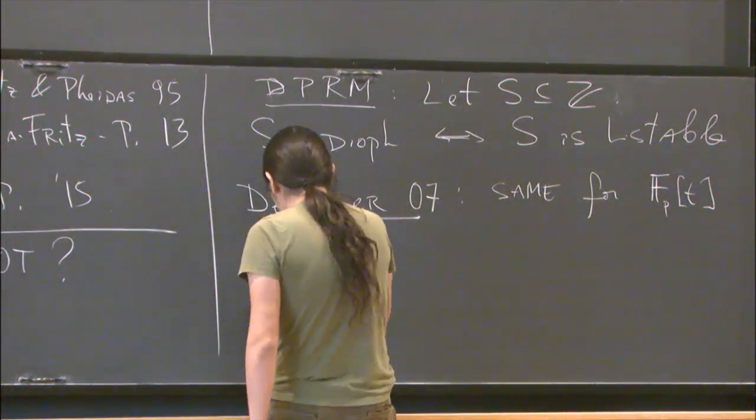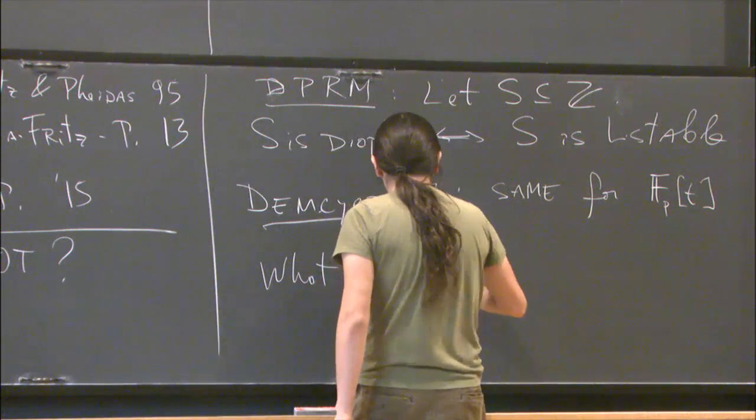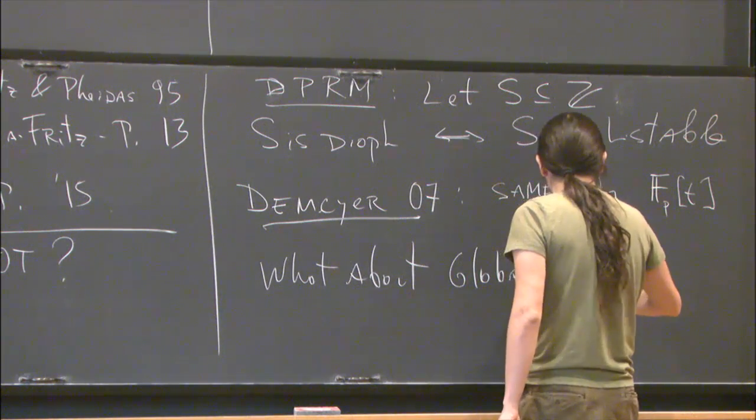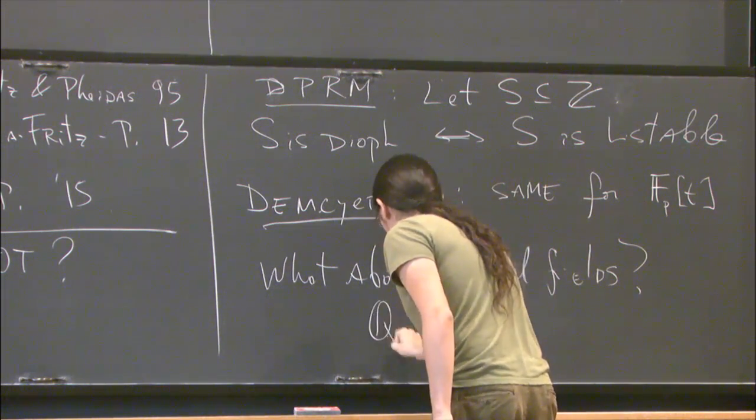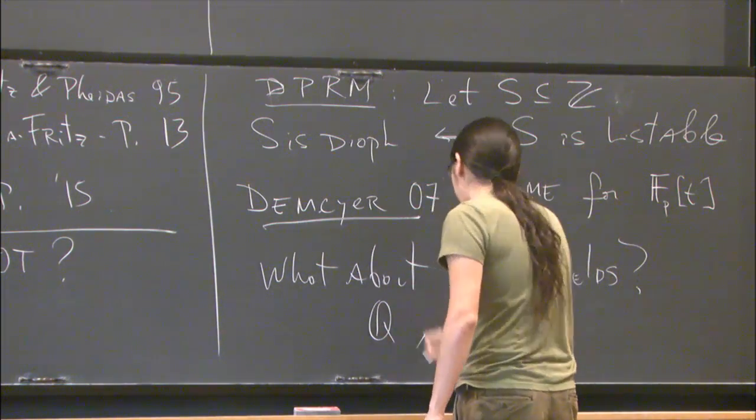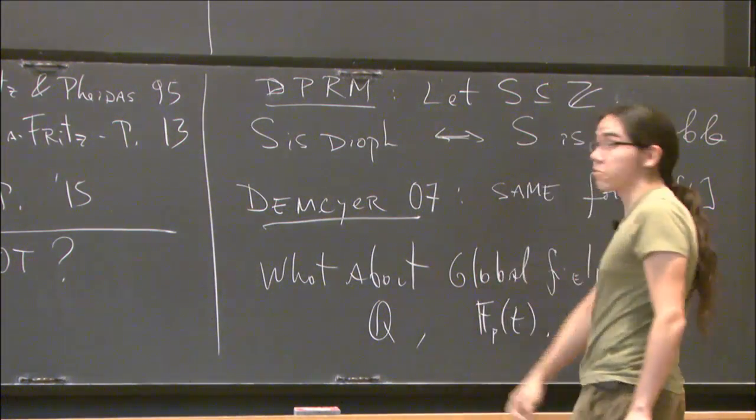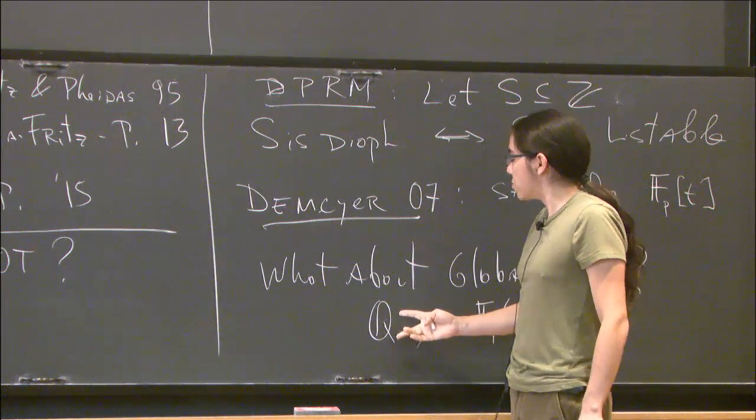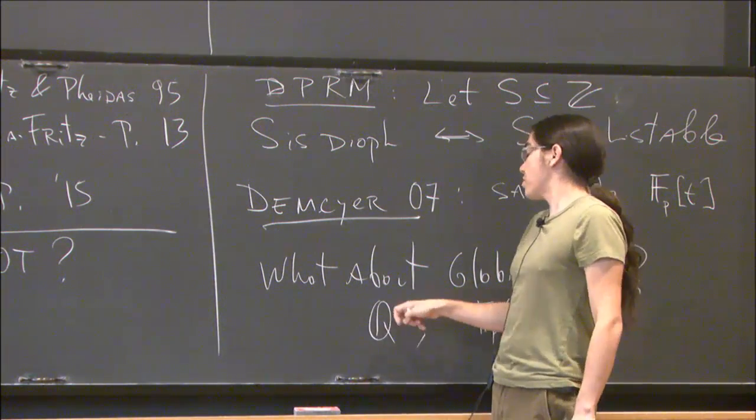Now I want to ask the question, what about global fields? So I mean here—let me remind you—I have in mind Q and Fp(t) just to keep the ideas concrete. And actually, this is open. As I mentioned, we don't know Hilbert's 10th problem here, so there is no hope that we will understand the full totality of the Diophantine sets for Q.